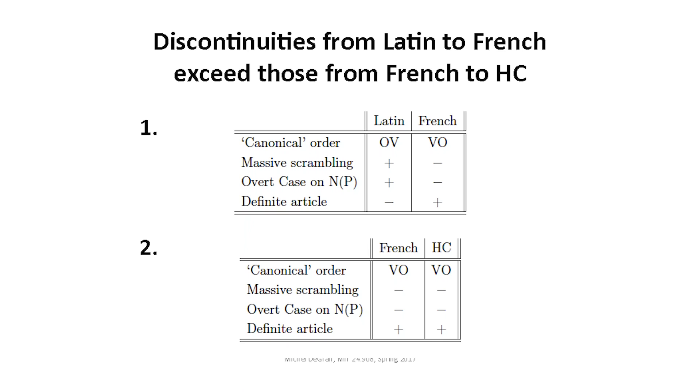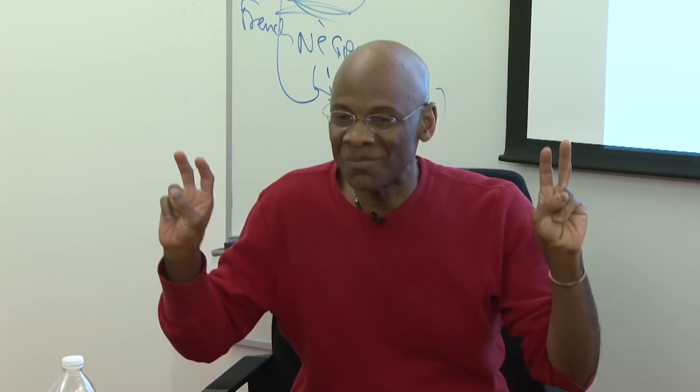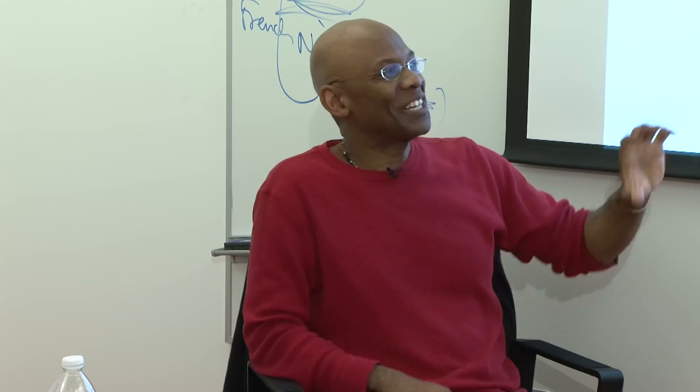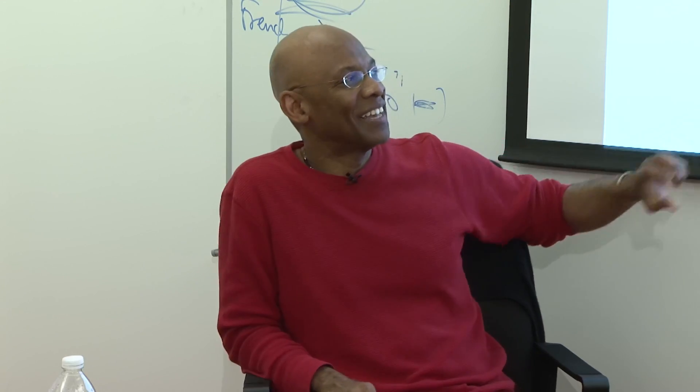Canonical word order, scrambling, overt case, articles — French and Creole have the same patterns on all four. So what does that show? That at least along these four parameters, Haitian Creole is much better behaved than French. In fact, if you were to create a degree of Creoleness based on how broken the grammar is — which is what lay people often think of Creole as: Jamaican Creole is broken English, Haitian Creole is broken French — then here you'd have to say French is broken Latin.